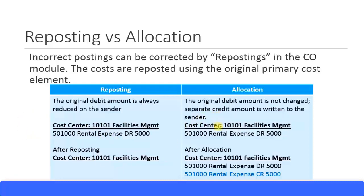But in allocation, as we've seen in earlier presentations, the original debit amount remains intact. At the bottom of the cost center report, you will see the credit entry coming in. Even though the net effect is zero in both cases, in allocation the actual debit and credit entries are both displayed, and the other cost center will have the debit entry. So in reposting the entry is gone, whereas in allocation the original entry as well as the credit entry remain visible.